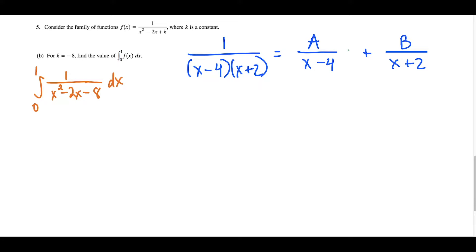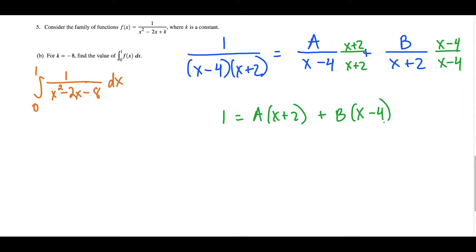We call these numerators A and B, and we have to do algebra now to solve for the constants A and B. The technique is that we multiply the first fraction by x plus 2 over x plus 2 to get a matching denominator, and the second fraction with B in the numerator needs another factor of x minus 4 on the bottom. Now all three fractions have matching denominators, so their denominators just cancel out. We don't have to worry about any discontinuity because x equals 4 and x equals negative 2 are outside the interval from 0 to 1, so this function is continuous from 0 to 1. Once the denominators cancel, we'll have the equation 1 equals A times x plus 2 plus B times x minus 4.